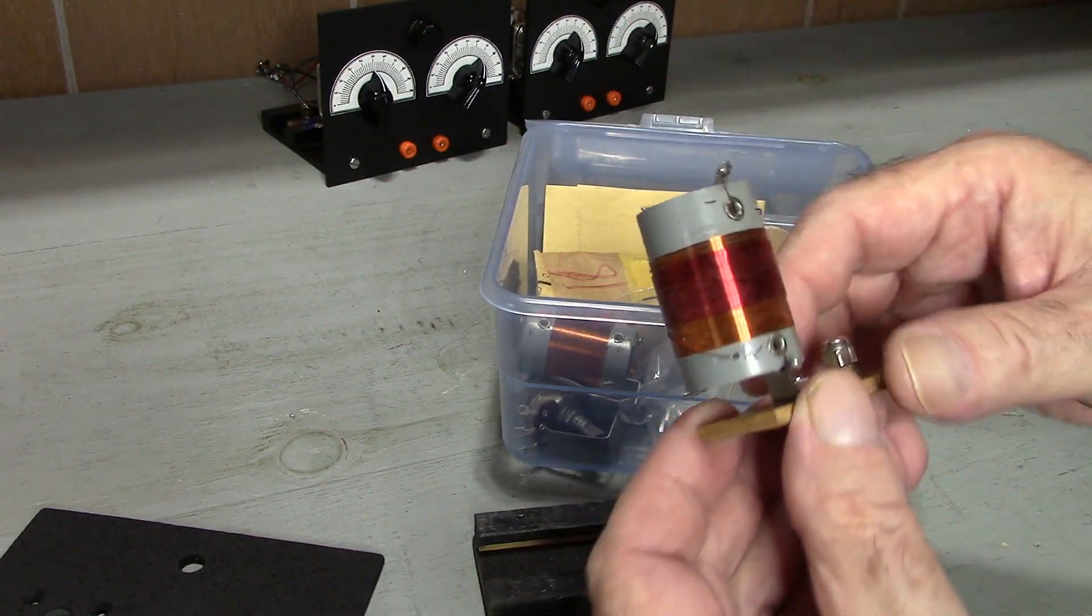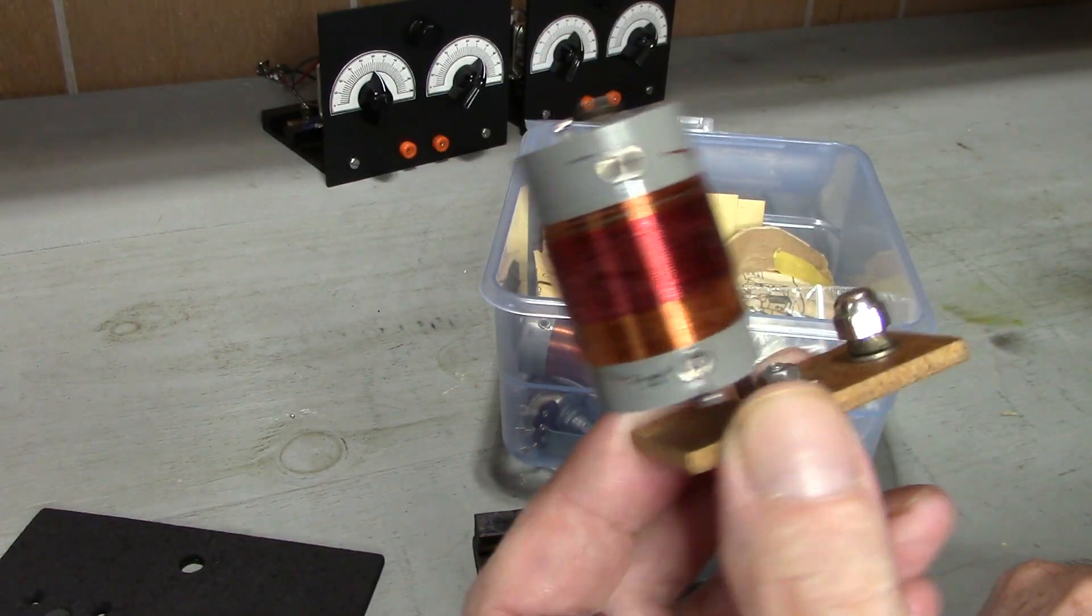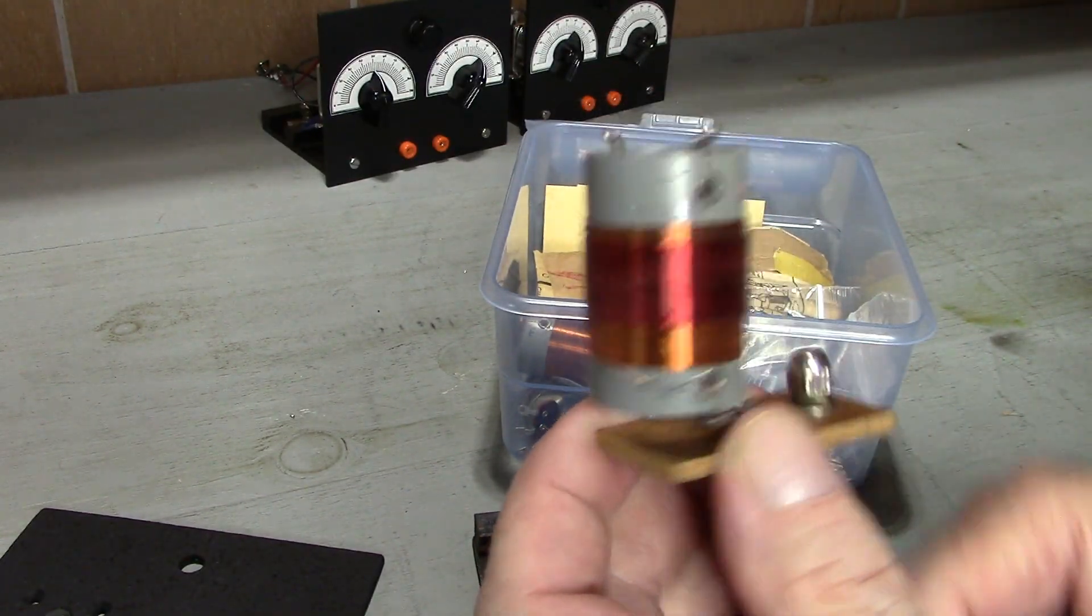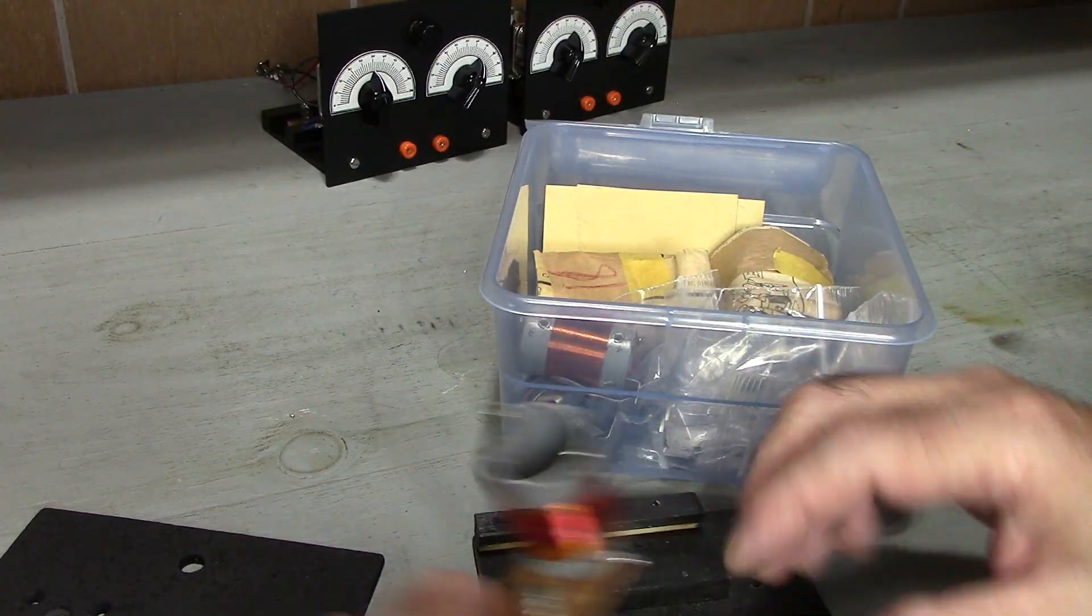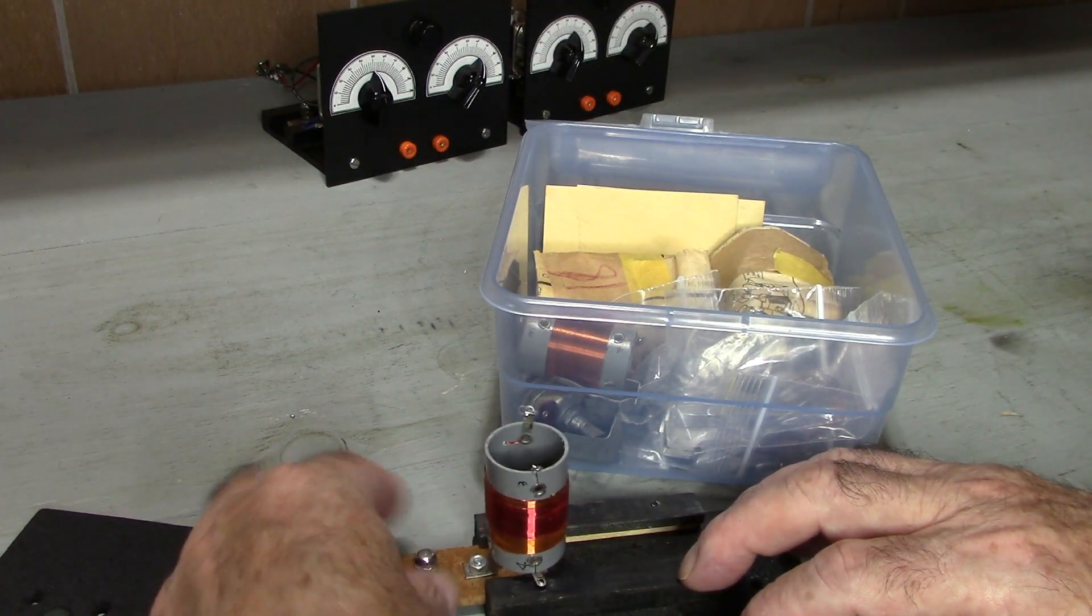And here's the primary coil on its base. These coils were hand wound by Elmer Osterhout himself. And here's how it slides back and forth in the rails.